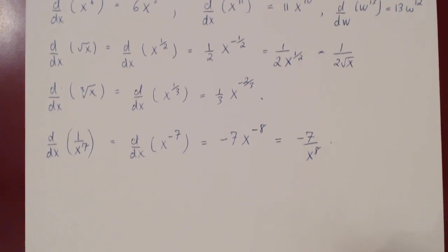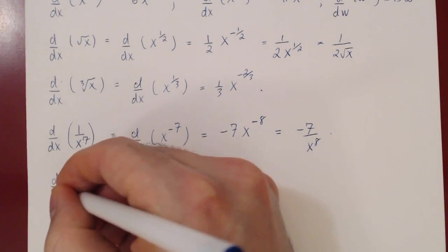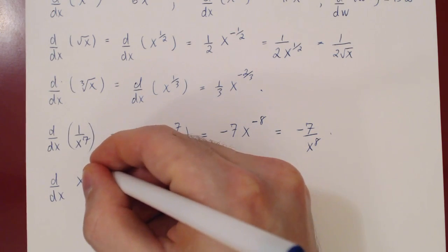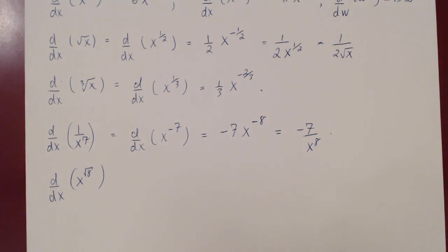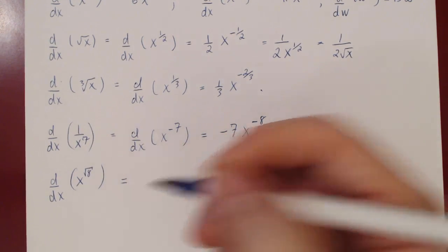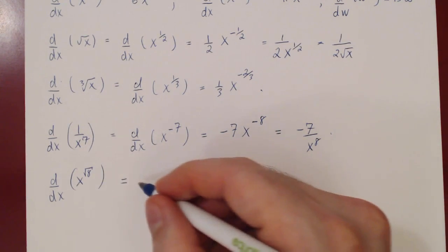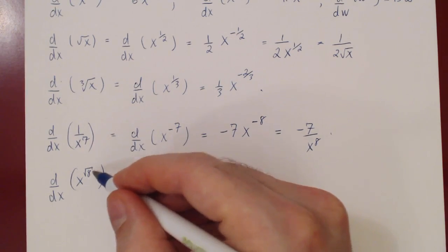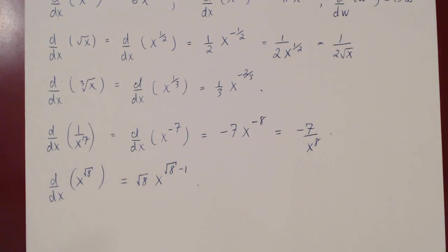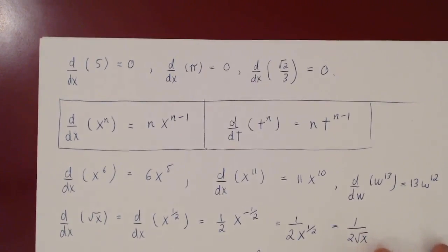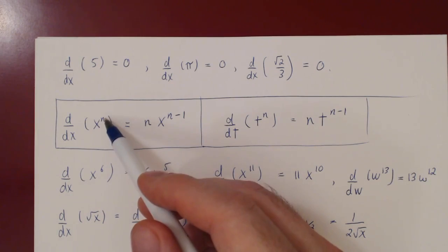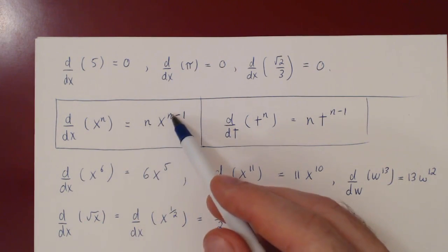One last example: what's the derivative of x to the root of 8? We have a stranger exponent, but root of 8 is a constant, so we can apply the power rule — bring the exponent down: root of 8 times x to the root of 8 minus 1. So now we can differentiate a constant — the derivative of a constant is always equal to 0 — and if you differentiate a power of x, you bring the exponent down and subtract 1 from the exponent.